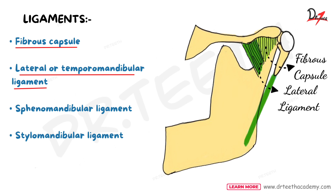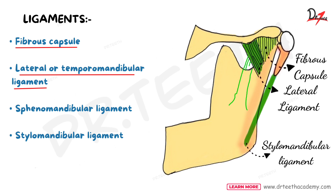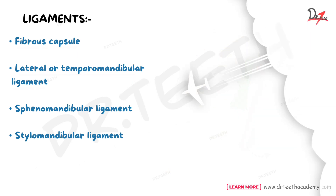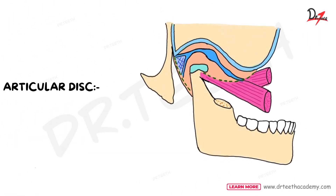If we see the joint from the posterior part, we can see the stylomandibular ligament, which is present between the styloid process and the mandible. Just above the stylomandibular ligament we have the sphenomandibular ligament, which is attached from the sphenoid bone to the mandible. Notice how these names represent the origin and the attachment.